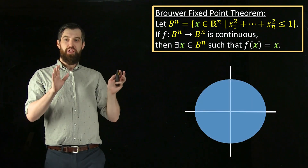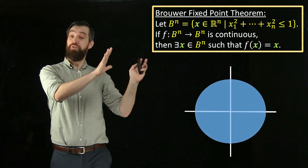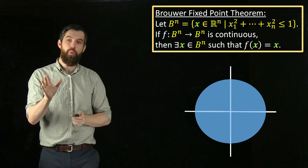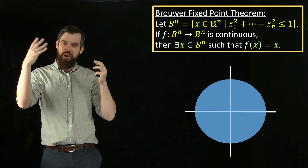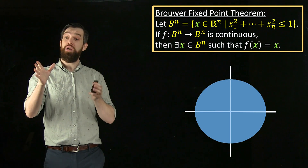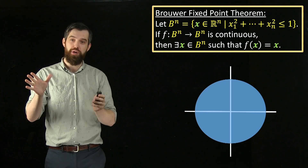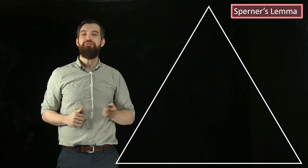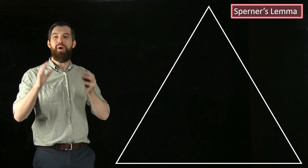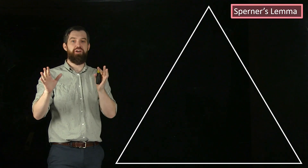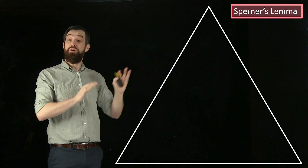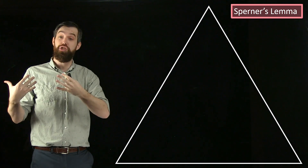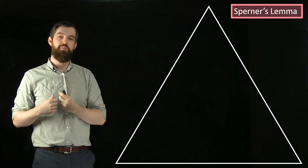There are many different ways this theorem can be proven, and I'm going to choose one that is fairly easy to follow along and is combinatorial in its nature. To prove this, I first want to show a different theorem — Sperner's Lemma. We're going to prove Sperner's Lemma, and then from Sperner's Lemma, we're going to show Brouwer's fixed-point theorem.